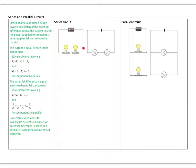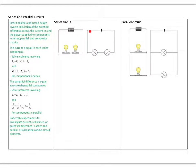A series circuit has one loop. We can think about a battery with two light bulbs — this is a circuit diagram representation of that. The two light bulbs are represented with two circles with a cross. Everything is in line with each other, everything lines up in series — that's why we call it a series circuit.